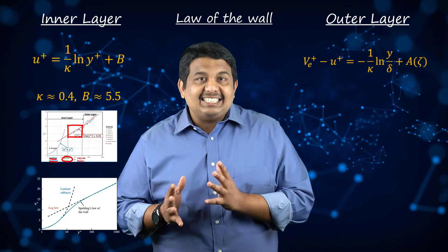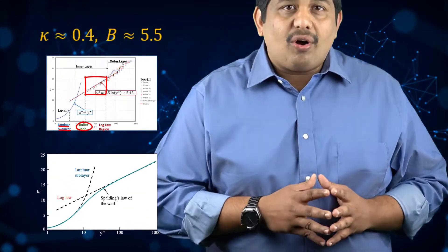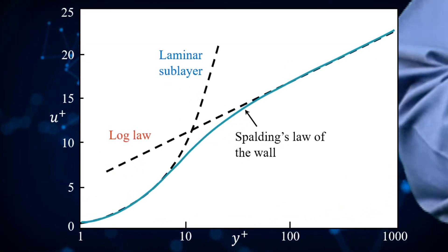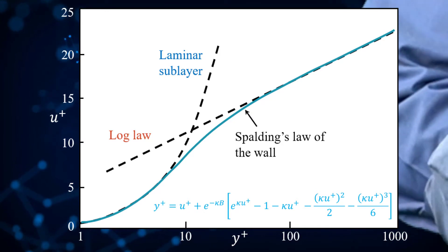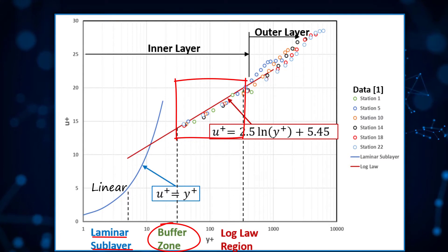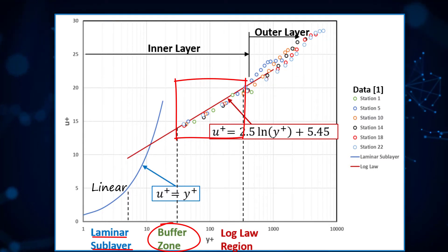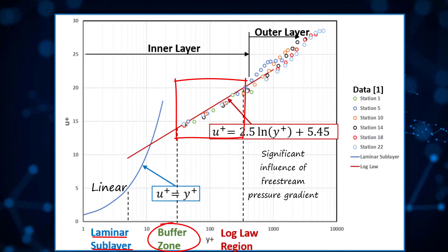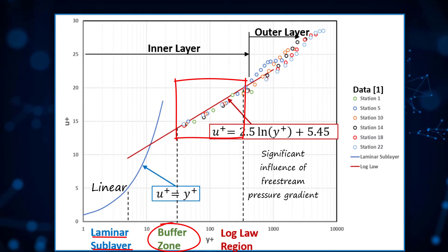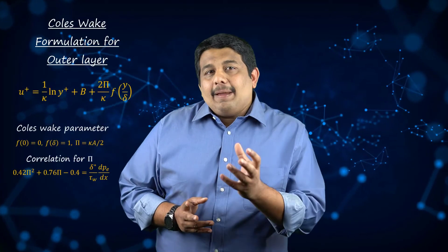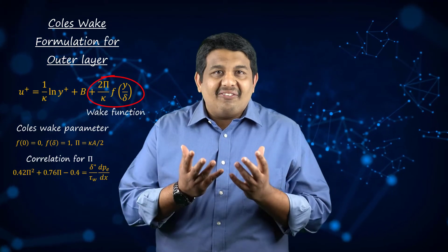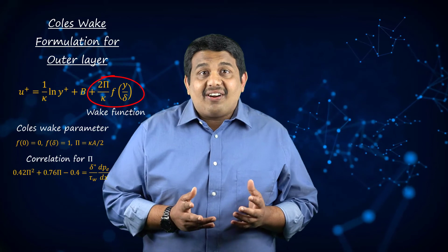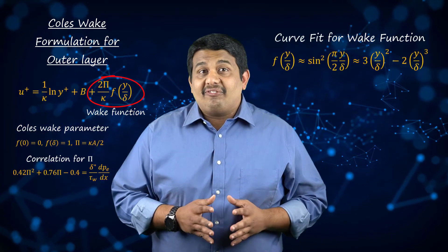Spalding, in 1961, proposed a composite blend of the law of the wall which is valid for the entire wall region including the buffer layer. Beyond a Y+ of 350, the logarithmic profile is no longer valid, because the outer layer at this location is significantly influenced by the free stream pressure gradient. Coles observed from multiple experiments that the deviation of the velocity from the log distribution takes the shape of a wake. He proposed a modification to the log law to include a wake function, a common form of which is shown here.